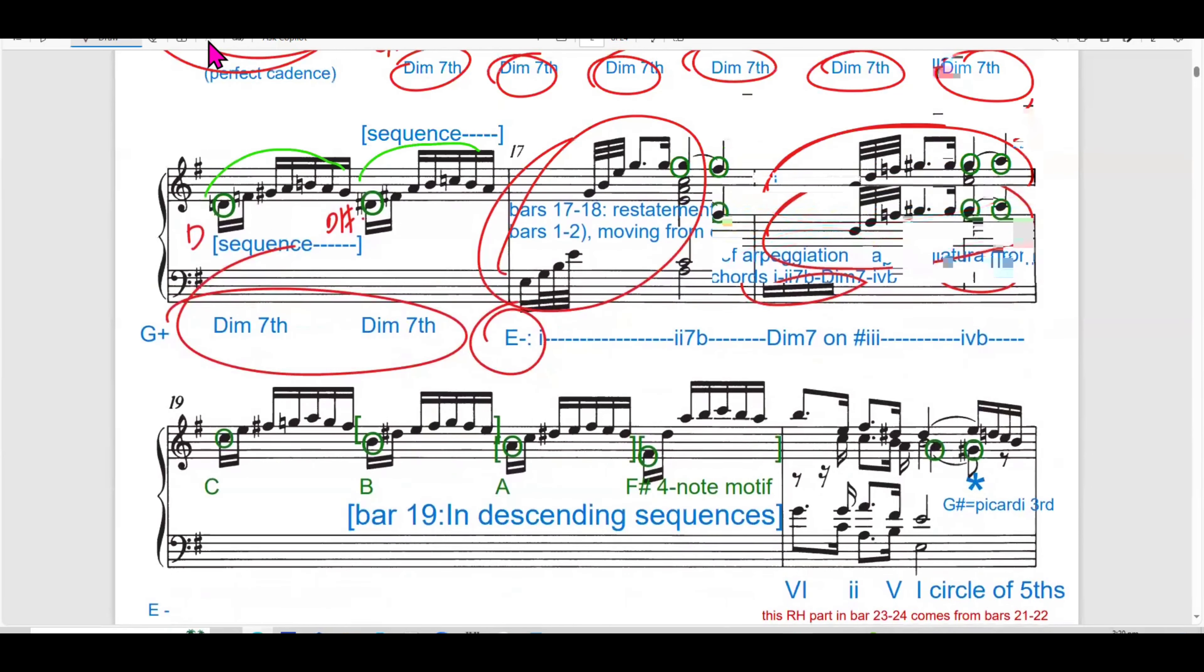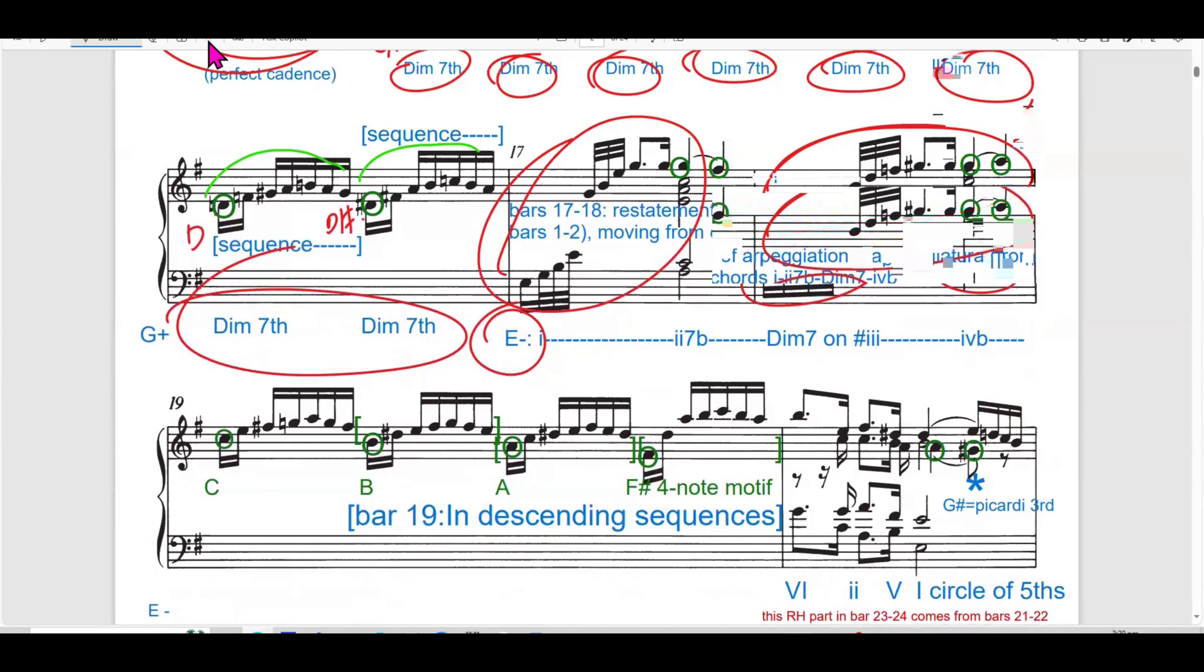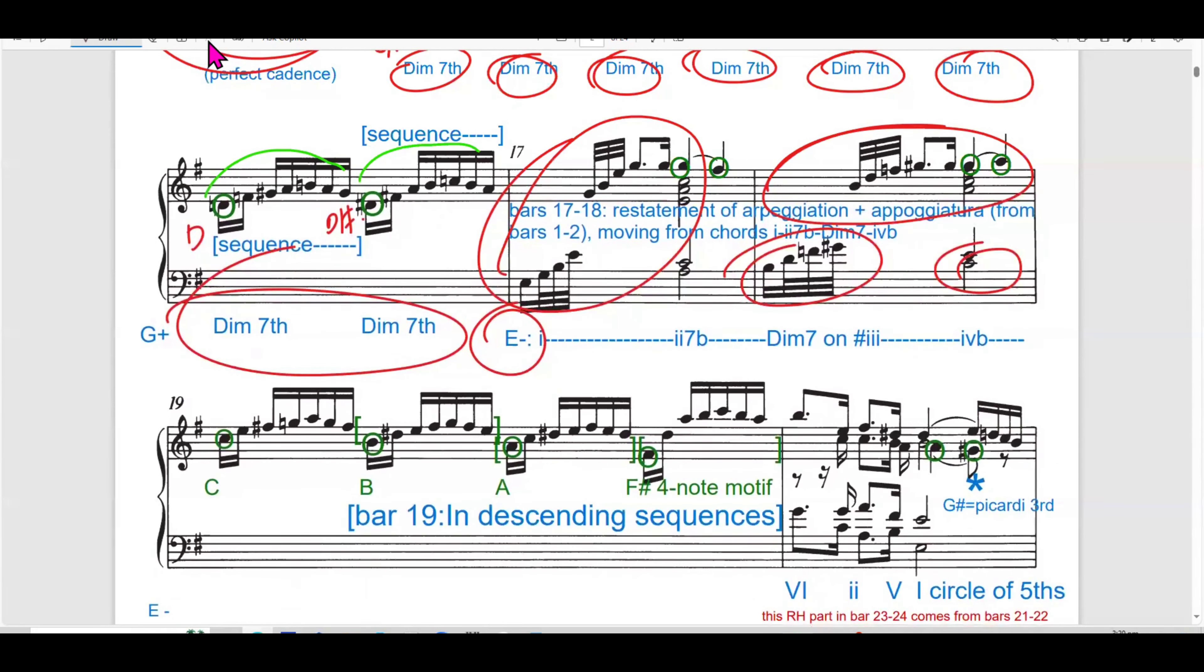In bar 17, Bach returns to E minor with a restatement of arpeggiation and appoggiatura seen in bar 1 to 2 this time. The harmonic progression moves from 1, 2, 7, diminished 7, on sharp on 3 and 4B to create a more complex harmonic palette.